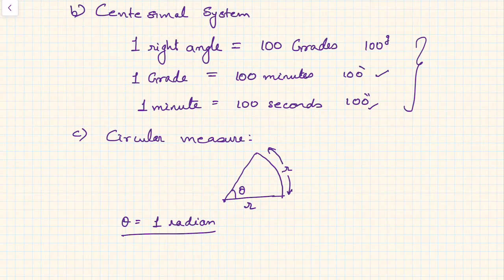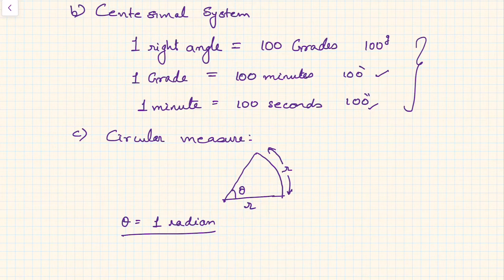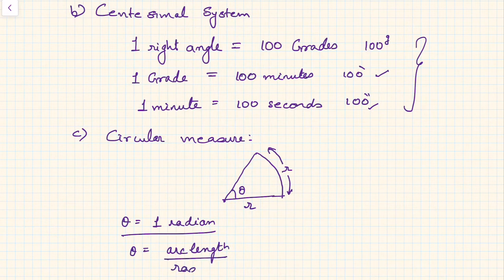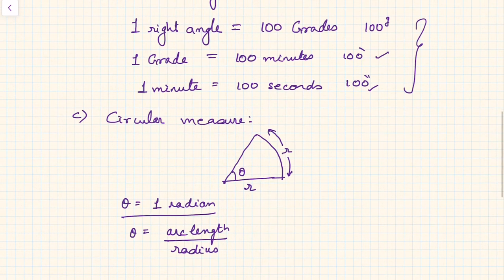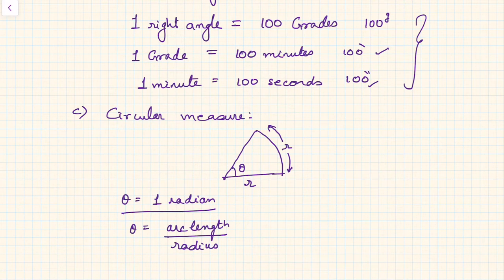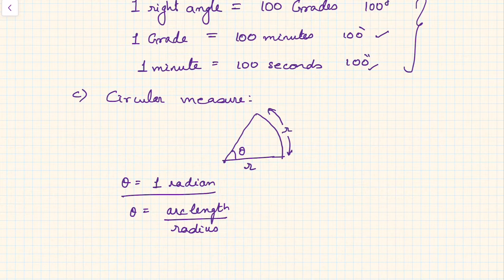One radian is the angle of a sector such that the arc length is equal to the radius. In the next session we'll prove that one radian is independent of the radius or the arc length, because one radian is simply the ratio of arc length to radius: theta equals arc length divided by radius. It is immaterial what the actual values of radius or arc length are, since they change proportionately. Theta is defined as one radian when arc length equals radius.